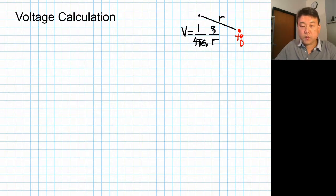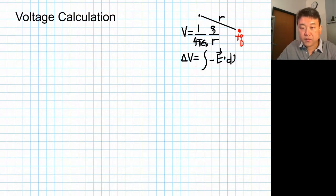And we derived this using the definition of voltage. The change in voltage is given by integral of minus E dot dl, some path that you choose, going from some point A to B. So this is the voltage change going from A to B.